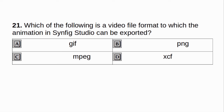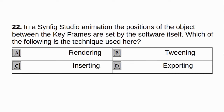Which of the following is a video file format to which the animation in Synfig Studio can be exported? A. GIF. B. PNG. C. MPEG. D. XCF. Answer: C. MPEG. In a Synfig Studio animation, the positions of the object between the keyframes are set by the software itself. Which of the following is the technique used here? A. Rendering. B. Tweening. C. Inserting. D. Exporting. Answer: B. Tweening.